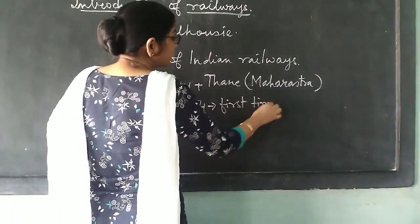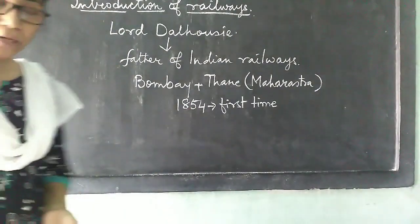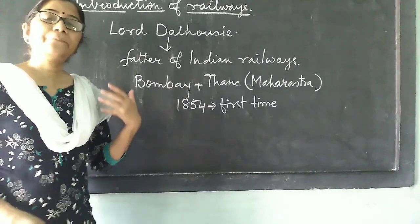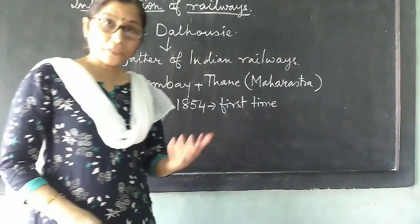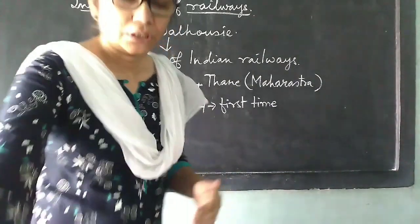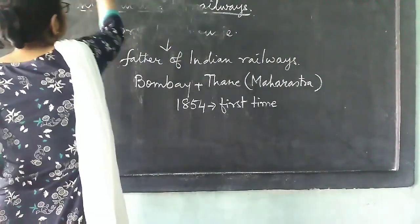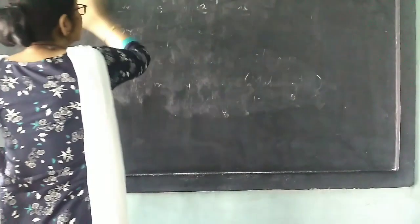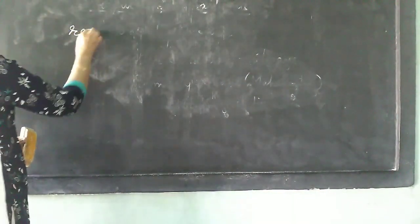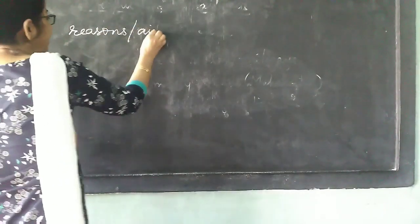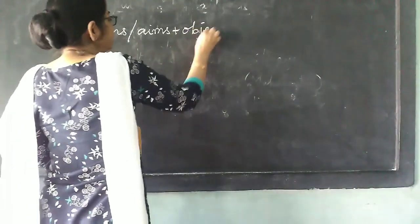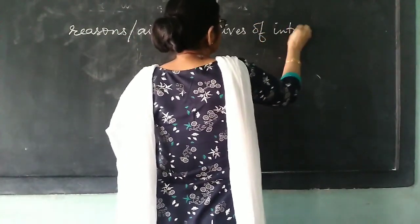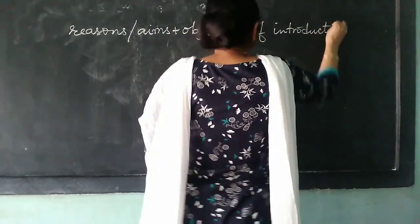The railways had started to run in the year 1854. We now need to learn about the aims — why Lord Dalhousie had introduced the railways in our country. Let us discuss the reasons and aims and objectives for the introduction of railways.